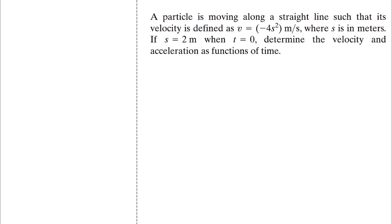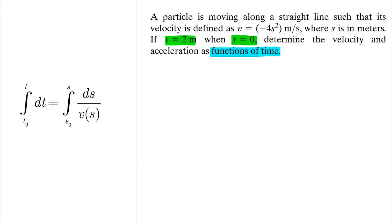In this problem, a particle is moving in a straight line and its velocity is defined as v of s. s0 and t0 are given. Determine the velocity and acceleration as a function of time. The only equation that has v of s is this equation, and you can easily notice that the lower limits here are our given initial conditions. This means if we integrate this equation, we'll end up having two unknowns: s and t, which gives us s of t.